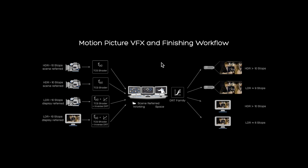All the visual effects, color grading, and finishing is applied in this state. Another transform we call the display rendering transform is applied to this data to form image data, which is defined by display specifications and viewing conditions. There is not a single display rendering transform, but a family of transforms which have a common starting point but end in different encodings for different display specifications and viewing conditions. The resulting image data is called the display-referred image state.